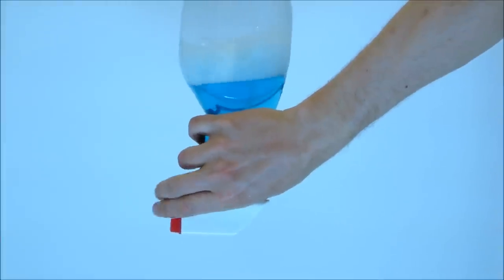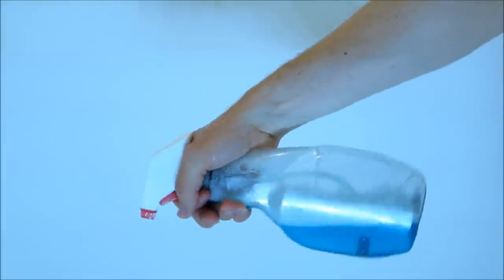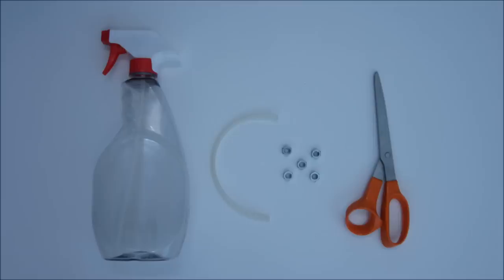But with some simple modifications, you can make a spray bottle that works in any orientation. For this project you'll need a spray bottle, an 8 inch piece of flexible tubing with a 1⅛ inch inner diameter, 5 ¼ inch stainless steel nuts, and a pair of scissors.